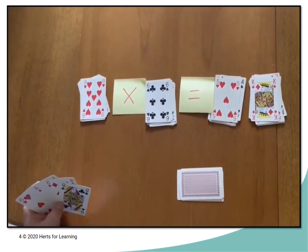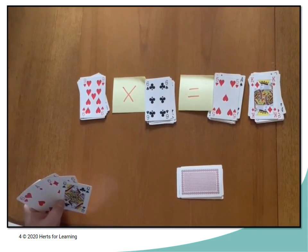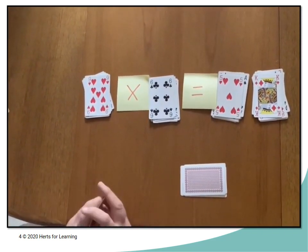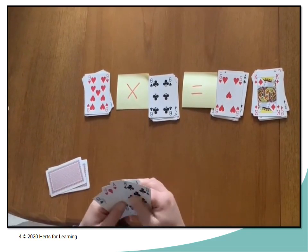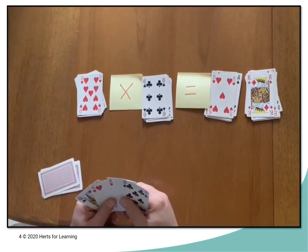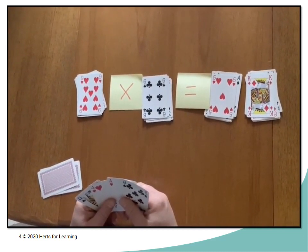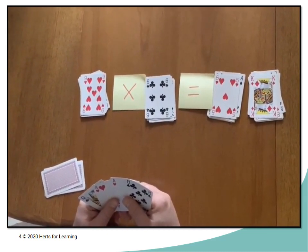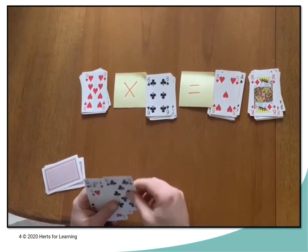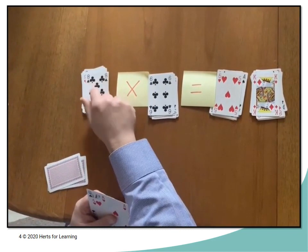But here we've got 9 multiplied by 6 is equal to 54, the king being worth 4 this time. So let's see if player two can get rid of any more of their cards. They could lay a 4 down on top of the king to get rid of that one, and it would read 9 multiplied by 6 is 54.